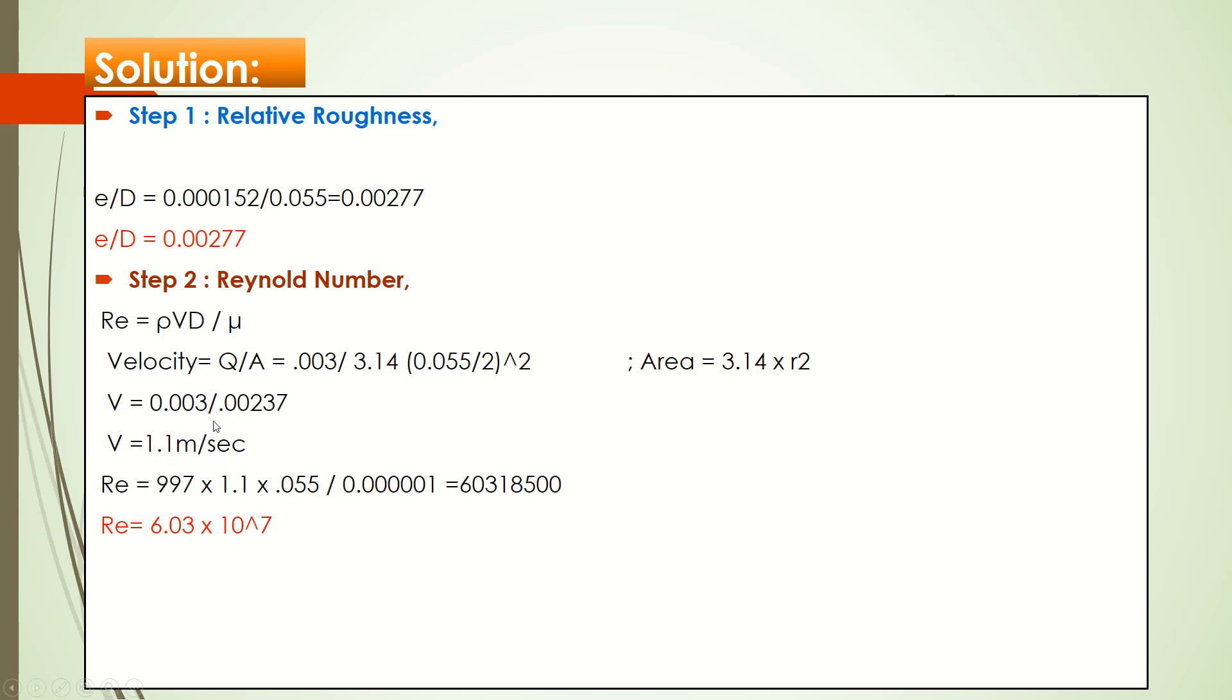Now, putting all values in Reynolds number formula: density of water, velocity of water you just calculated, inner diameter of the pipe, and kinematic viscosity of the water. You get Reynolds number: 6.03 × 10^7. Now you have both values: relative roughness and Reynolds number.